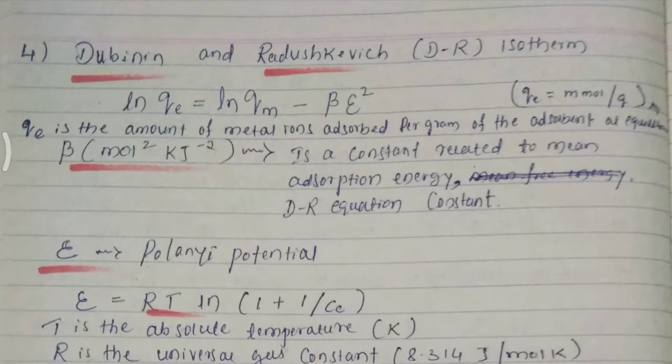qv is the amount of metal ions adsorbed per gram of the adsorbent at equilibrium. Beta unit will be mole square kilojoule raised to minus 2, so beta is a constant related to mean adsorption energy.